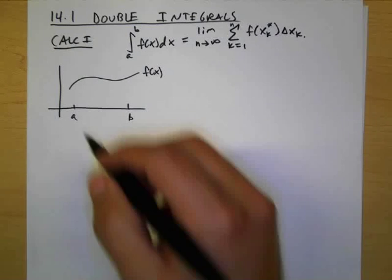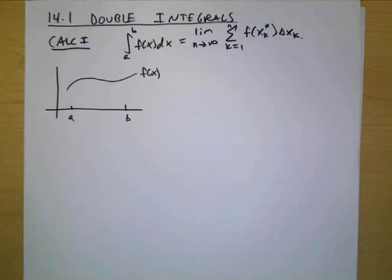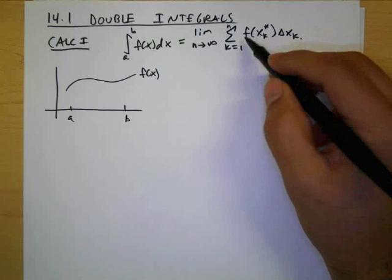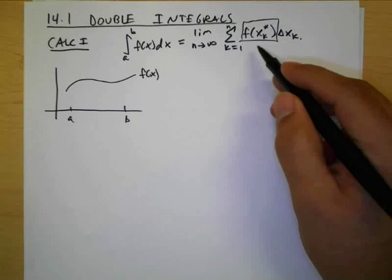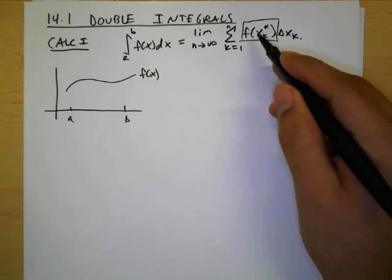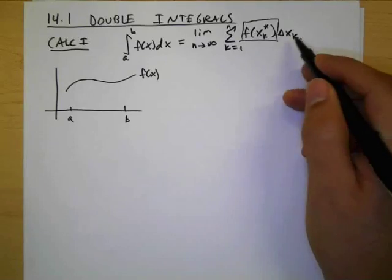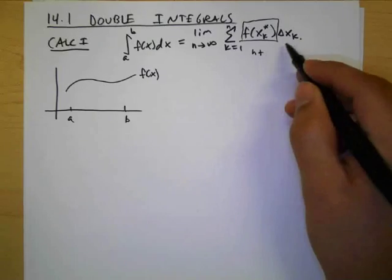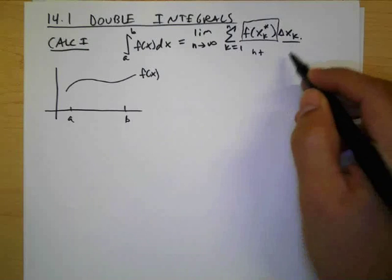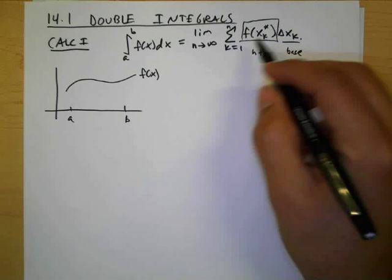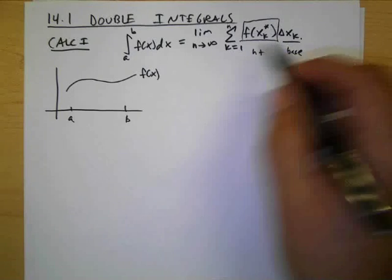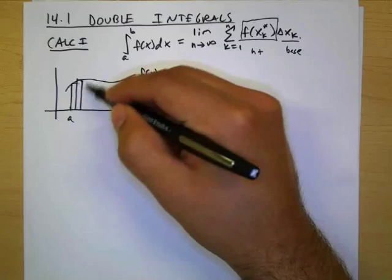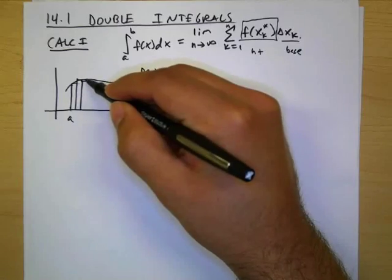Rectangles. And so this basically represented the height of each individual rectangle. That's why this has an asterisk. And then this represented the what? The base, yes. And when you sum all the height times bases, you get a what? An area. An area, yes.